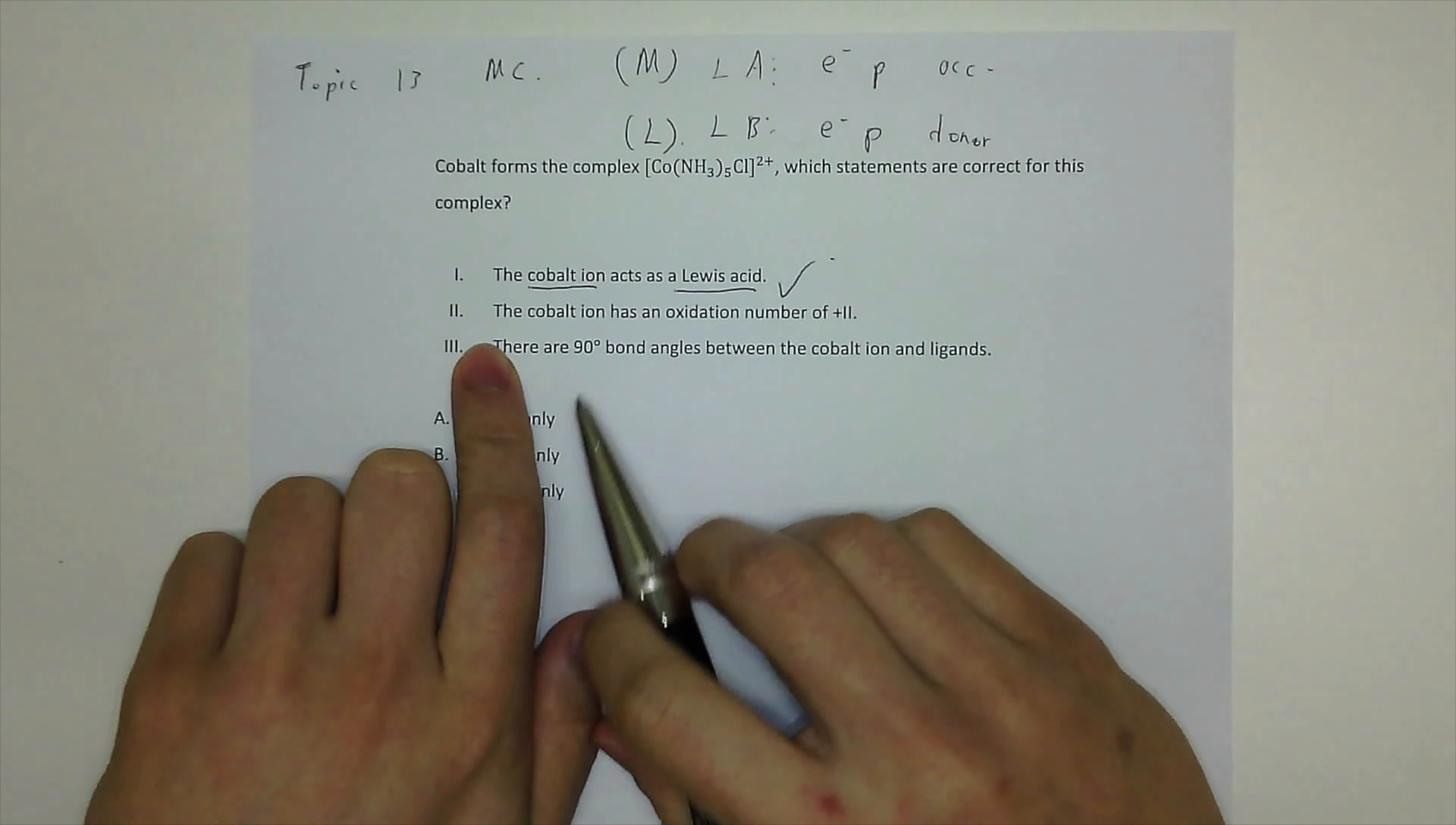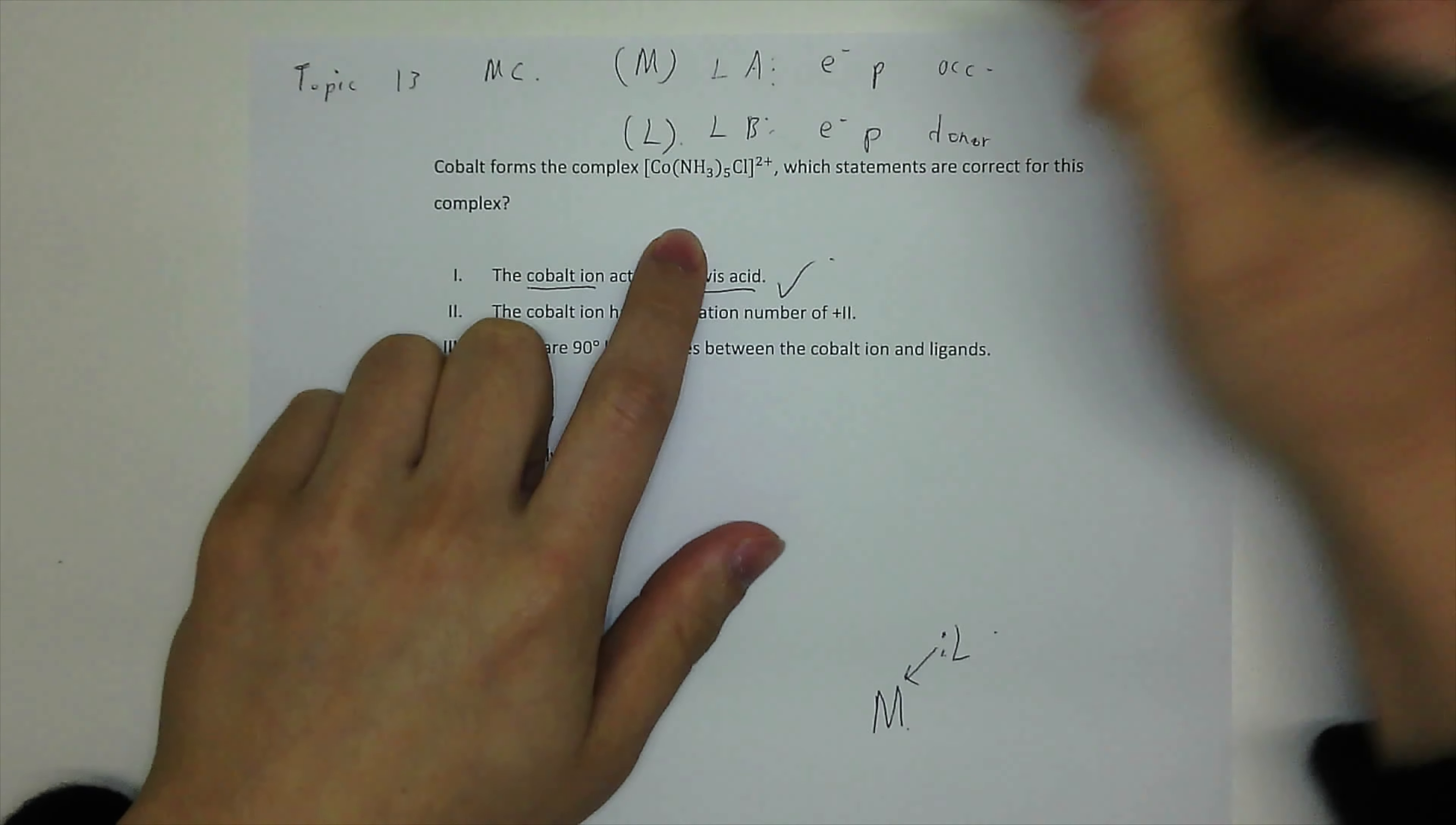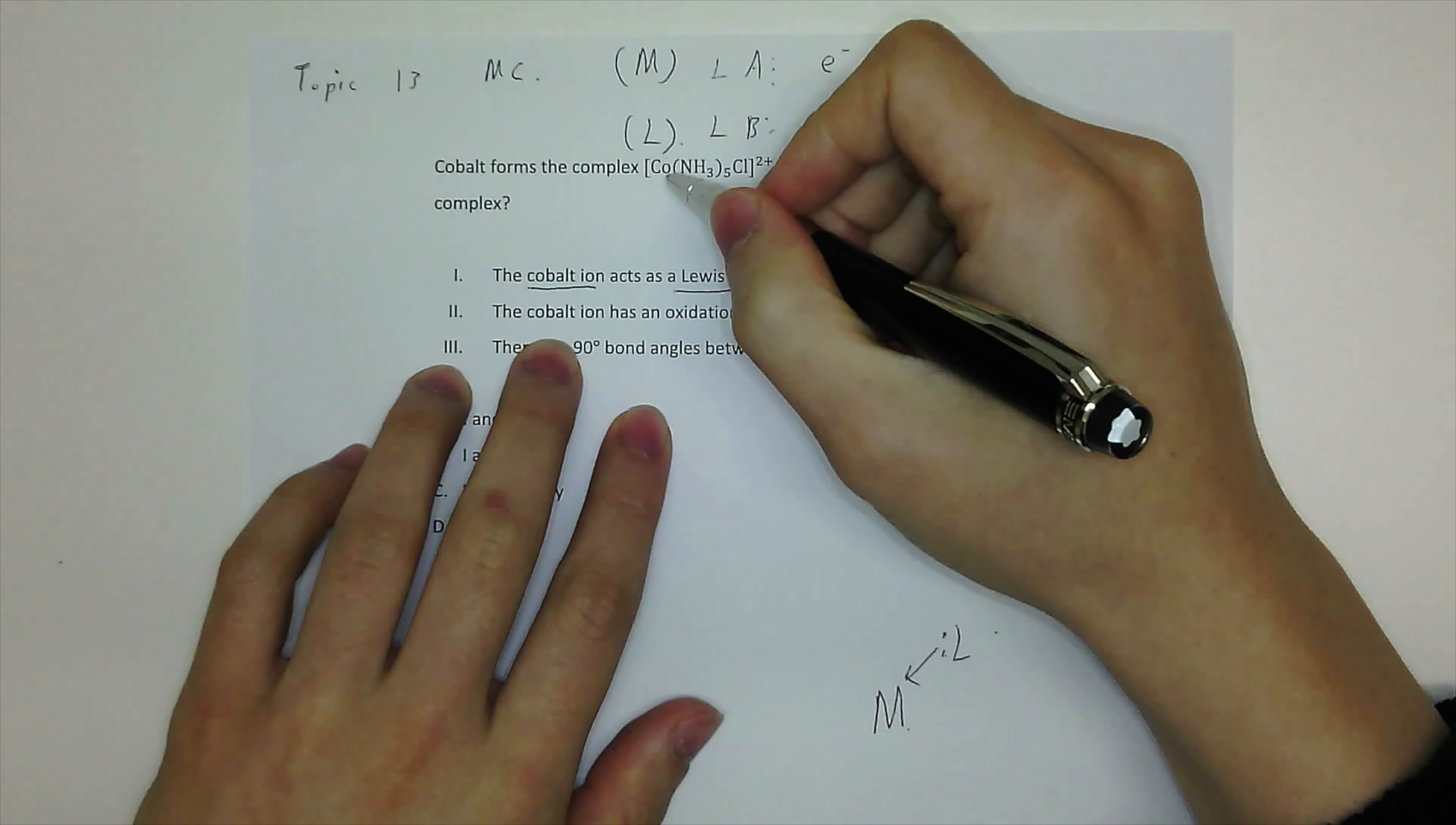Two, the cobalt ion has an oxidation number of plus two. So let's look at this complex ion formula. The rule is that the overall charge for the complex ion is plus two. And the rule to calculate the oxidation number for the cobalt ion or the metal ion, central metal ion is that